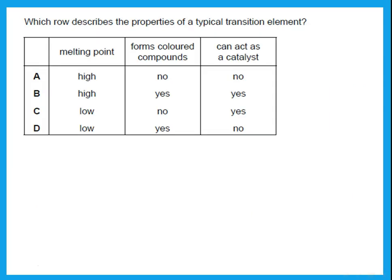Which row describes the properties of a typical transition element? Again, typical transition element, the melting point must be high. Forms color compound? Yes. Acts as catalyst? Yes. So my answer must be B.